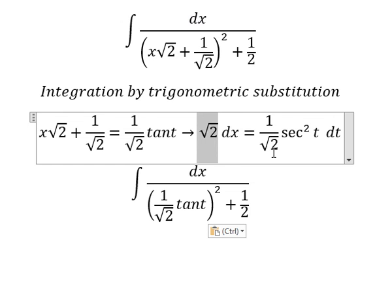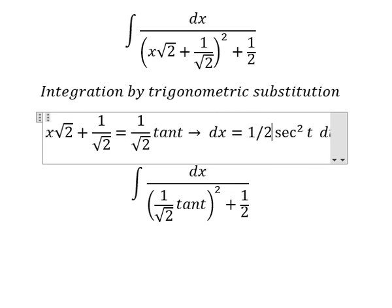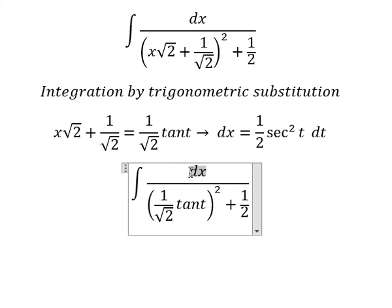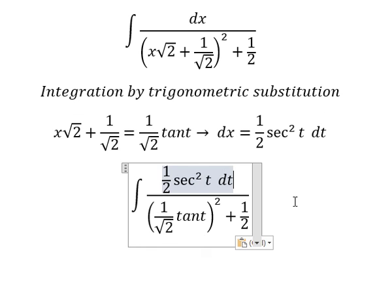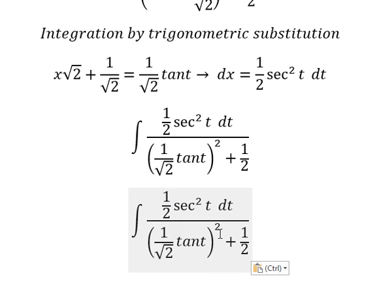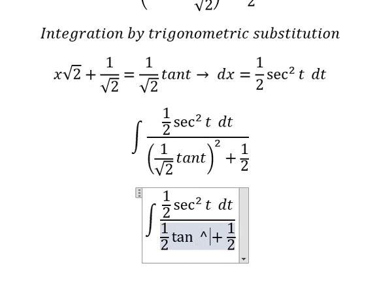We rearrange this so that we have one over two, and I will put this one in to substitute for dx. Now this gives us one over two times tan²(t).